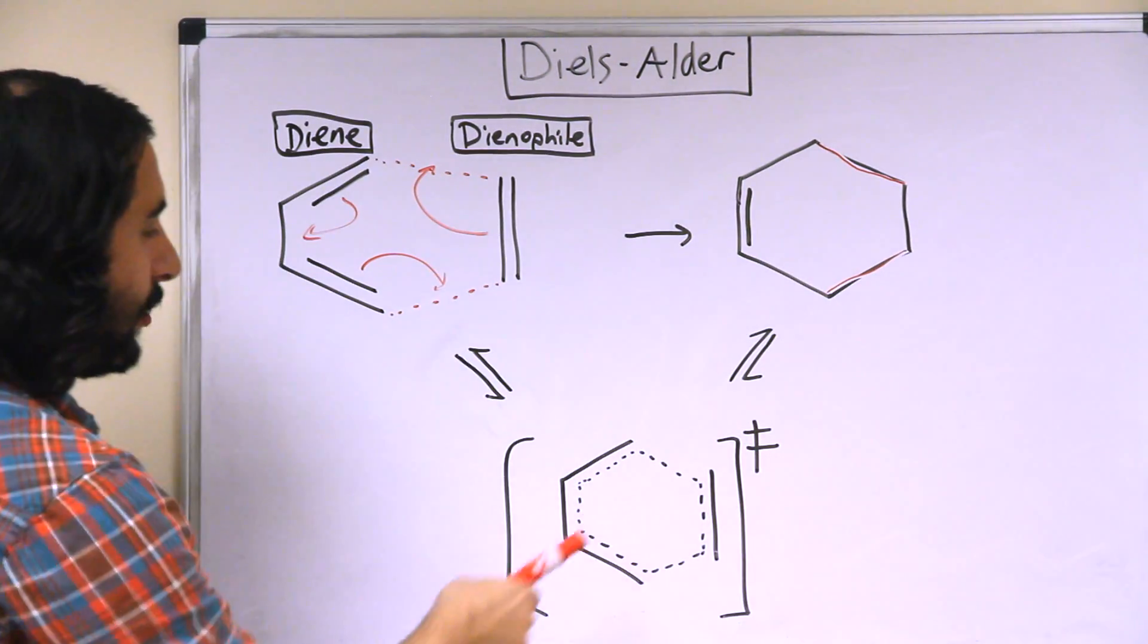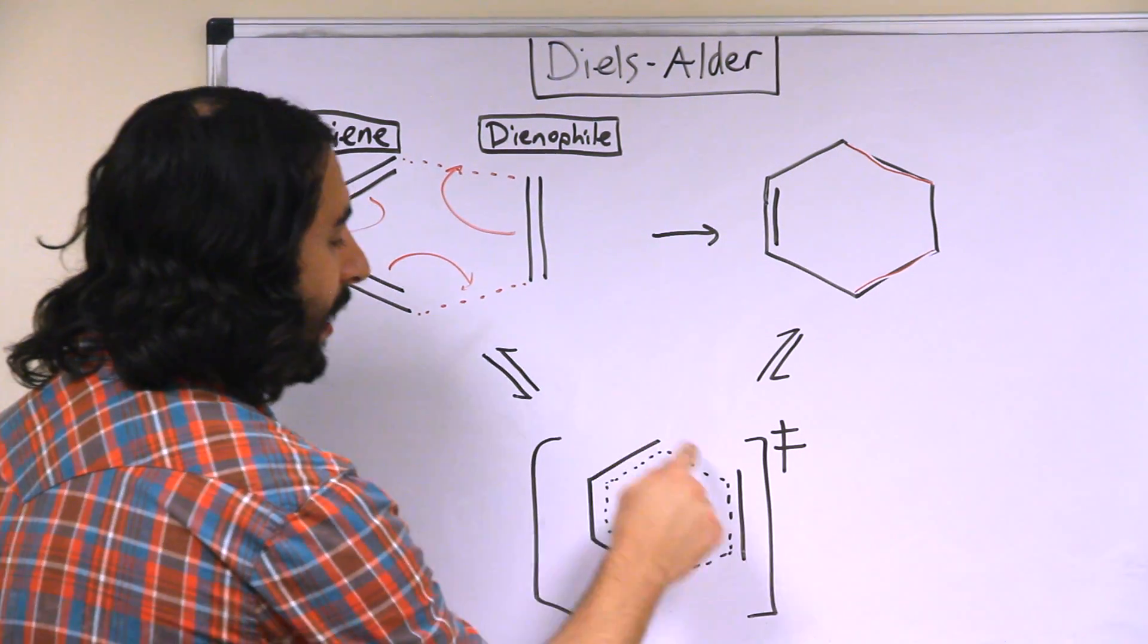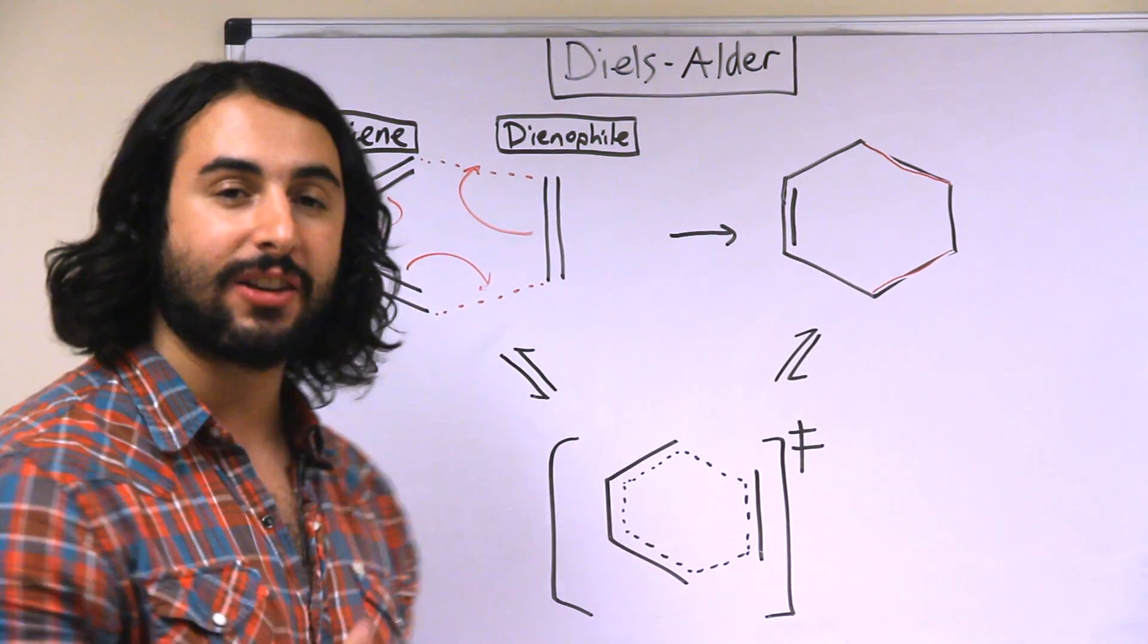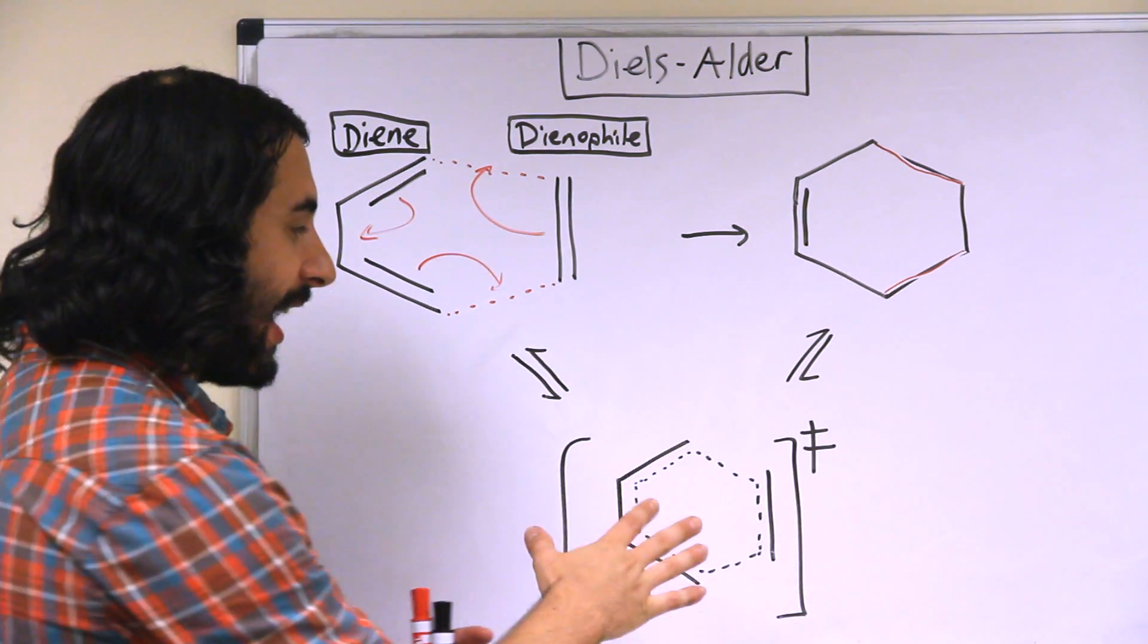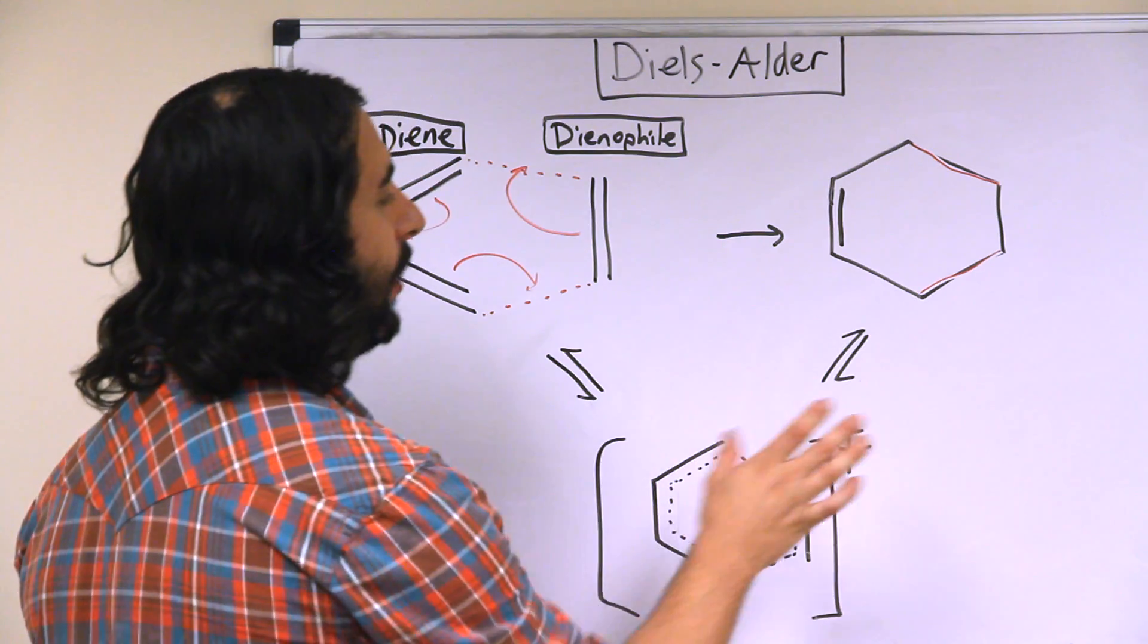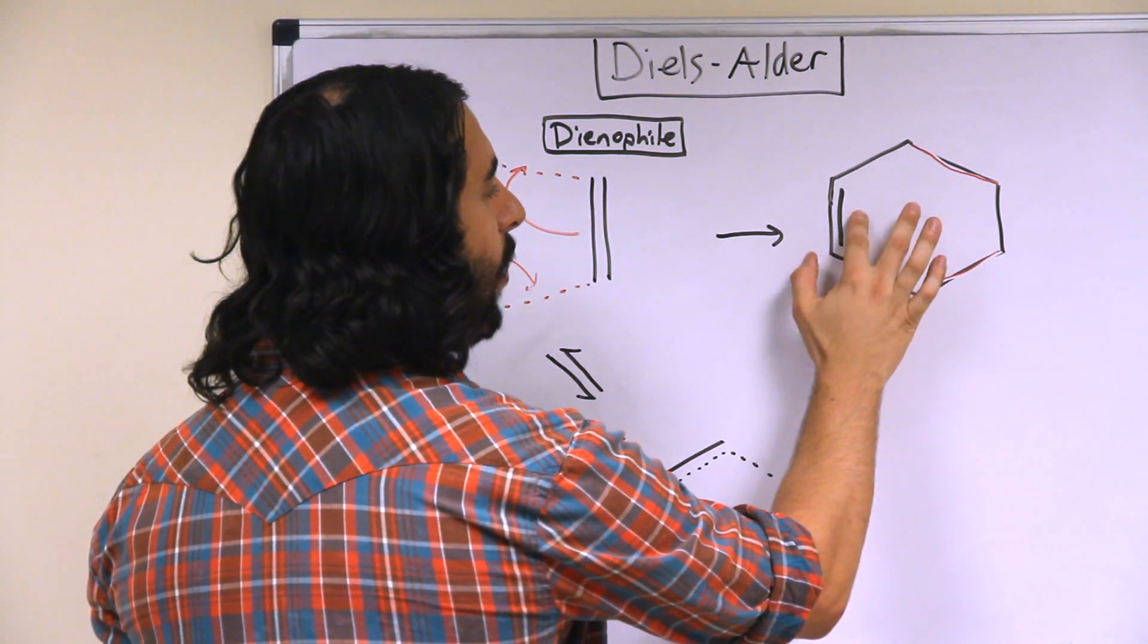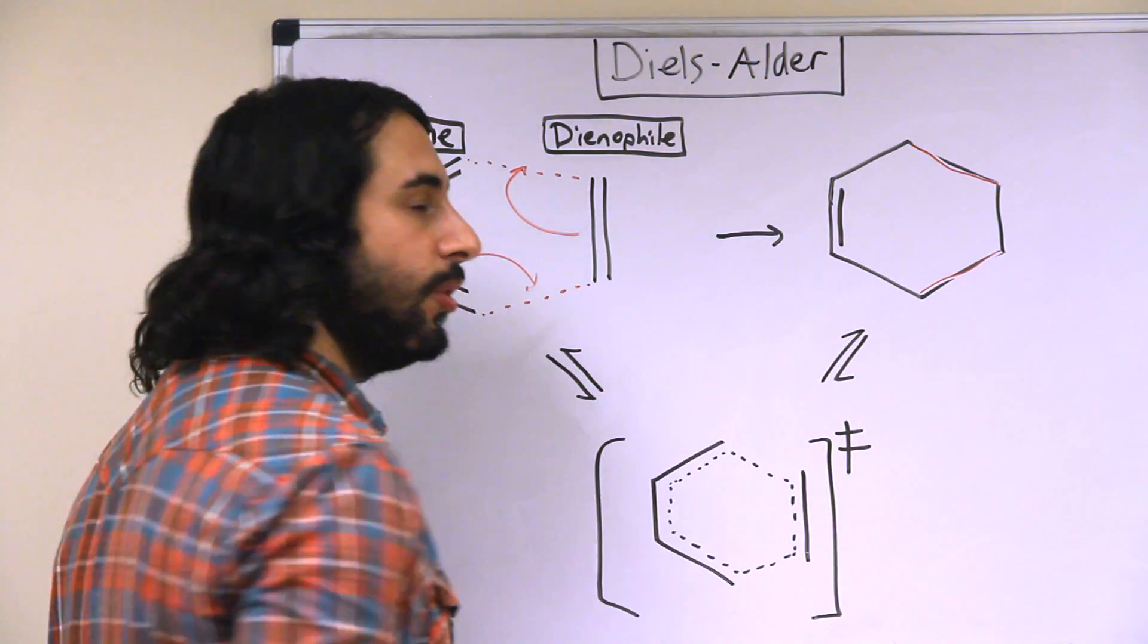And so if we look at the transition state, we basically have a six-membered ring of partial pi electron density. And so that's illustrating how all of this is shuffling around at once. But what we end up with is always going to be a six-membered ring with one pi bond. And here are two new sigma bonds.